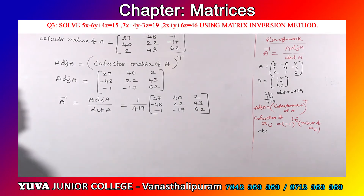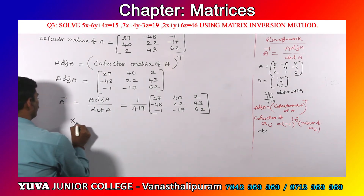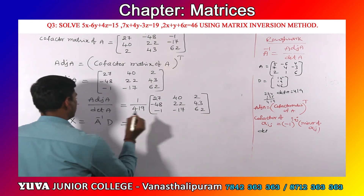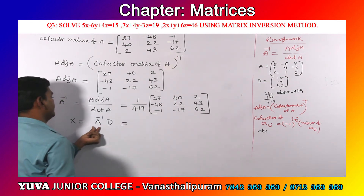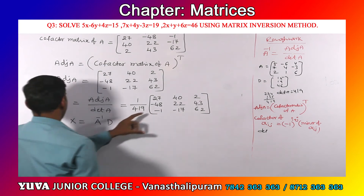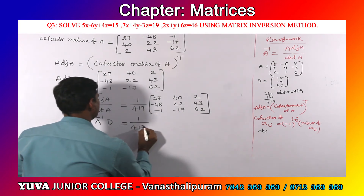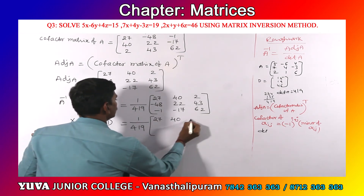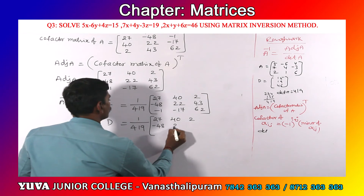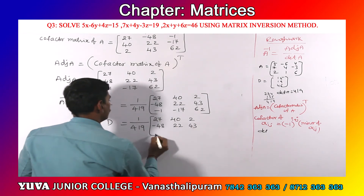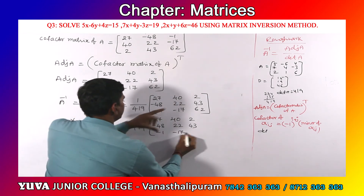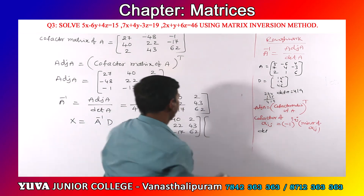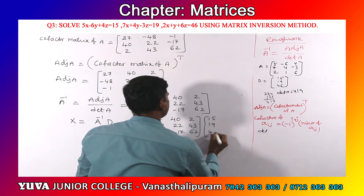Now, let us remind the formula. To find capital X we use X equals A inverse into D. Substituting A inverse and D: X equals 1 by 419 into [27, 40, 2; minus48, 22, 43; minus1, minus17, 62] into the column matrix [15; 19; 46].